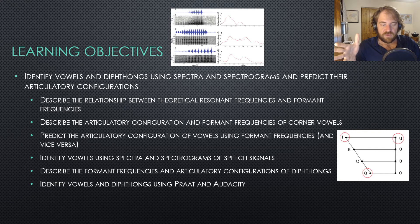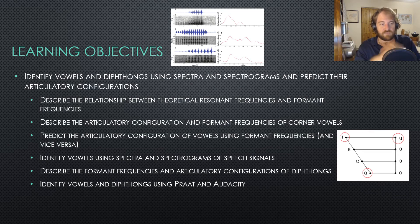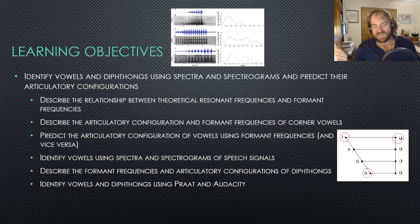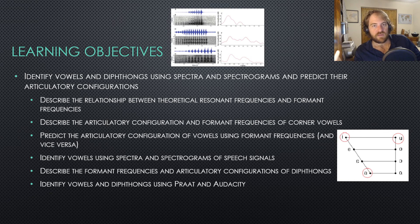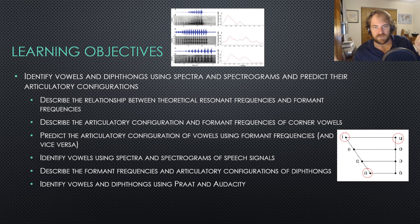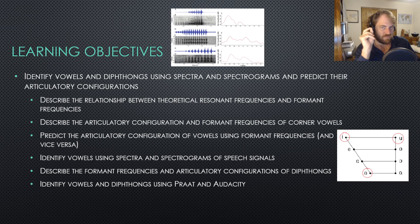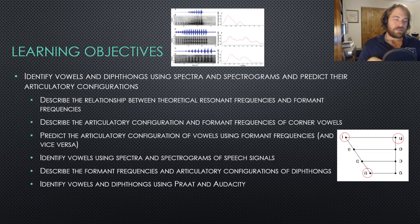Then we're going to describe the formant frequencies and articulatory configuration of diphthongs — they're not quite the same thing as vowels. A good example is 'A,' like 'bait.' It's not one sound; it's not like 'ah' in 'bot,' where you can really drag out the vowel. But 'bait' — you can't hold one sound; it goes through two sounds. That's a diphthong. Then lastly, we're going to identify vowels and diphthongs using Praat and Audacity.